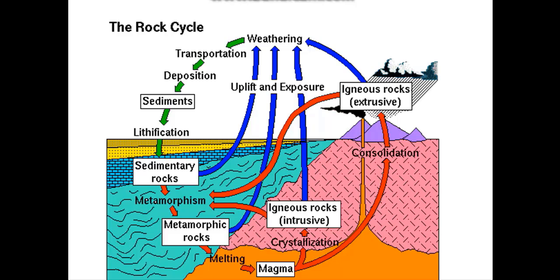Part of the magma solidifies underground, and part of it finds ways to come to the surface. It cools down, and then weathering acts on it — the weathering of that starts. The particles are then transported by wind, rain, water, and everything else, transported and deposited somewhere, and the sediments accumulate there.